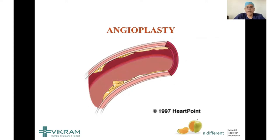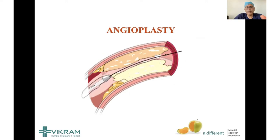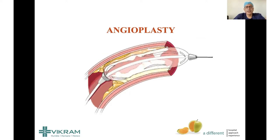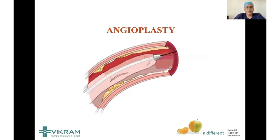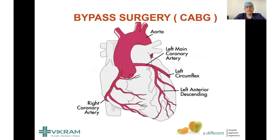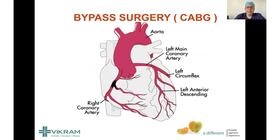In angioplasty, we put a wire, and on top of that we put a balloon to open, displace, and fracture the cholesterol block. Then to prevent the vessel from collapsing, we put a spring — known as a stent — and give good medicines to reduce re-blockages. Bypass surgery is a surgical option where we use small tubes — veins and arteries taken from the body itself — and bypass the blocked graft.